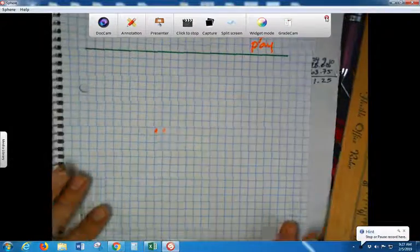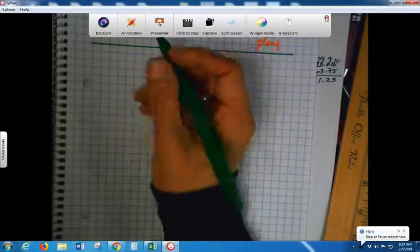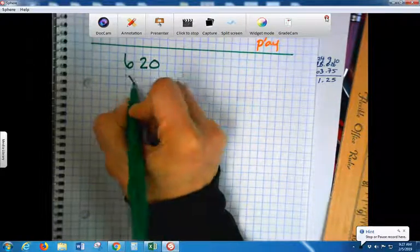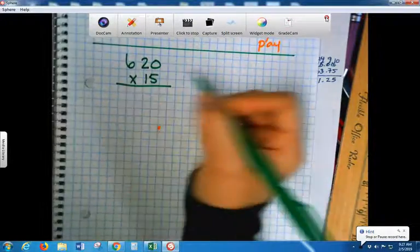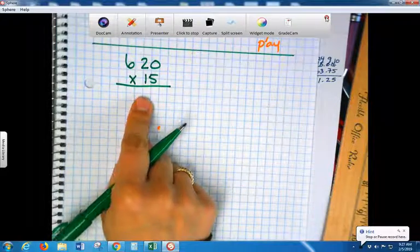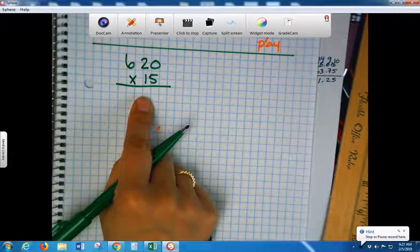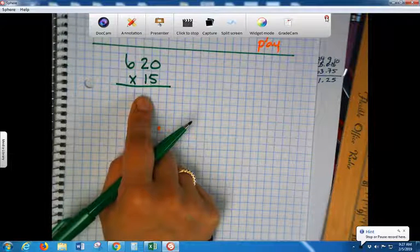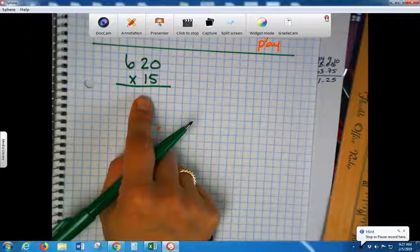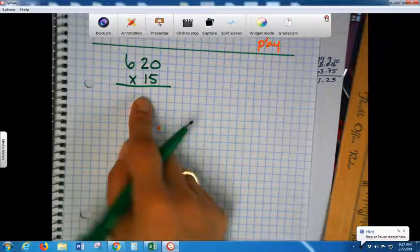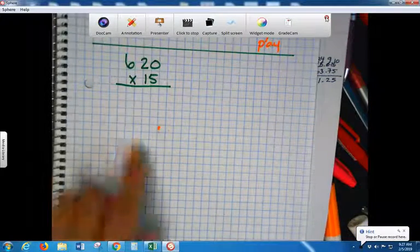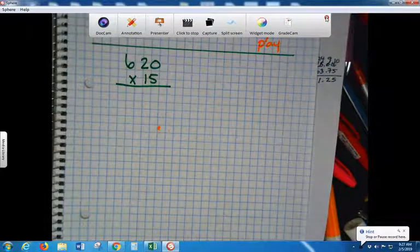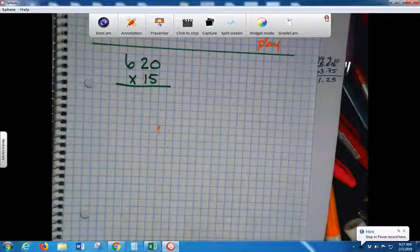You have your notes? Ready? Okay. So, if I wanted to multiply 620 times 15, right? Some of you are struggling with this. So I'm going to show you a different way of multiplying this and getting the same answer. And we're all going to try it.